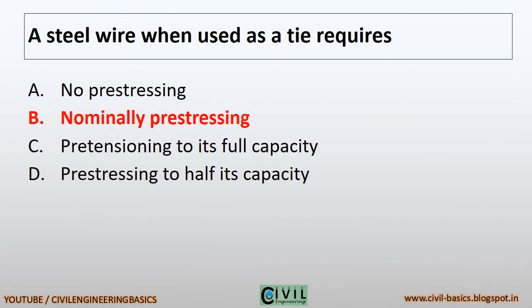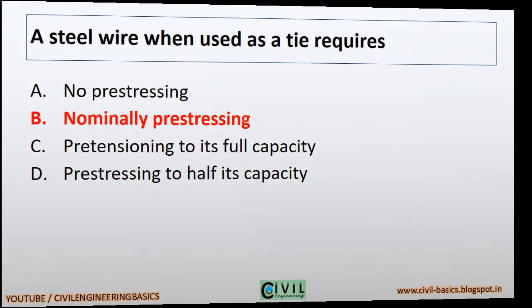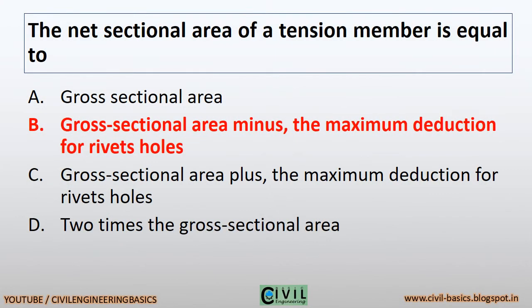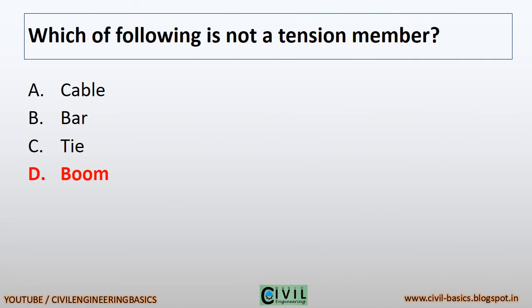A steel wire when used as a tie requires nominal pre-stressing. The net sectional area of a tension member is equal to the gross sectional area minus the maximum deduction for rivet holes. Boom is not a tension member — cable, bar, and tie are all tension members.